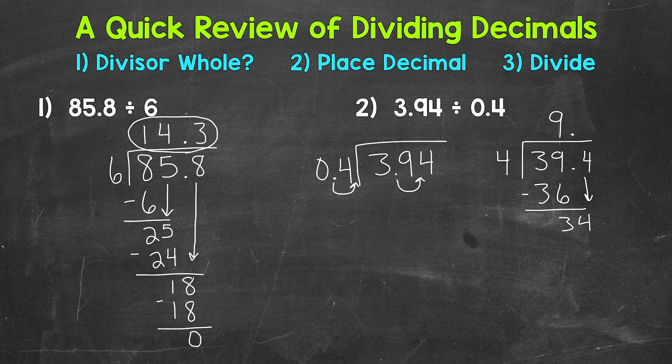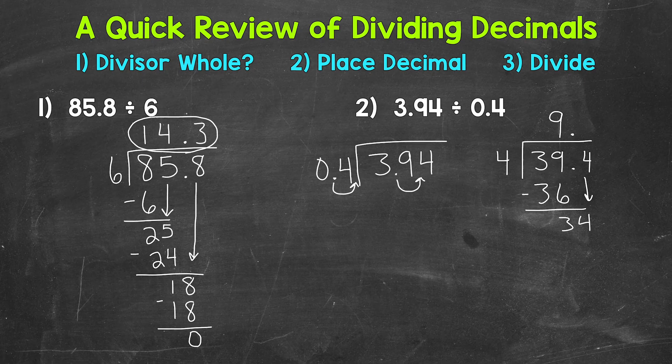So we have 34 divided by 4. How many whole groups of 4 in 34? Well, 8. That gets us to 32. So 8 times 4, 32, subtract, we have 2.